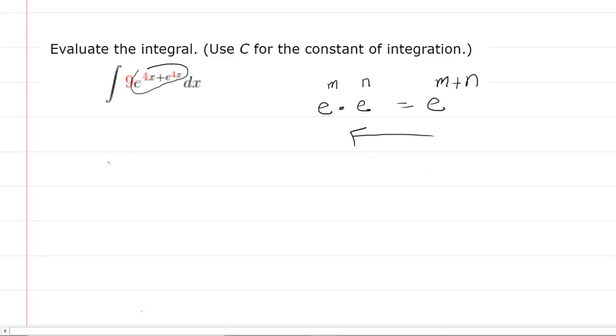And that's actually what we're going to do here. So let's go ahead and factor out the 9 just to get that out of our way. That's going to leave us with e to the 4x plus e to the 4x and then dx. And then again, we're going to use that revision or that rewriting that we just discussed. So you can rewrite this as e to the 4x multiplied by e raised to e to the 4x.